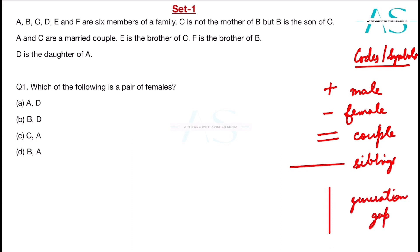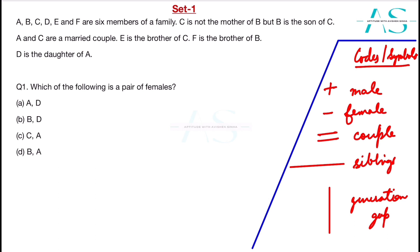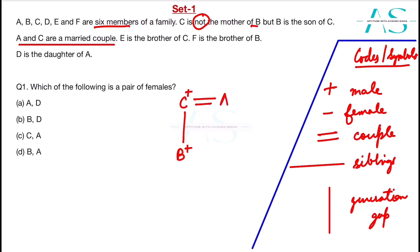Let's start with our first question. A, B, C, D, E, F are six members. C is not the mother of B but B is the son of C — this means C is the father. A and C are a married couple, making A the mother. E is the brother of C, so E is male and in the same generation as C.